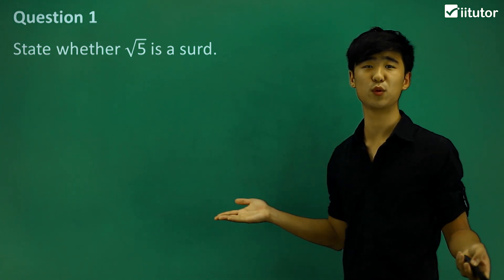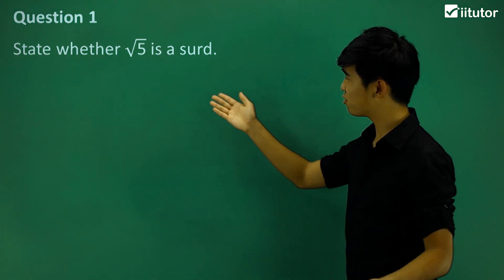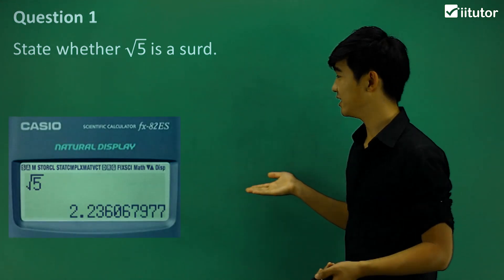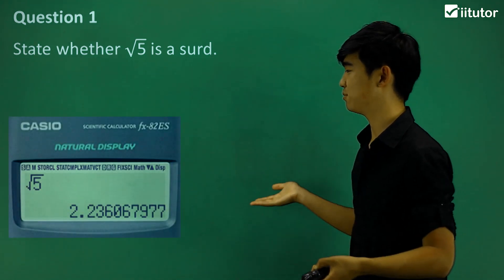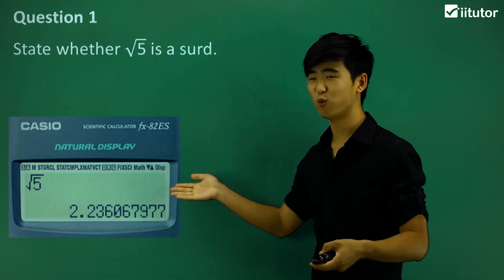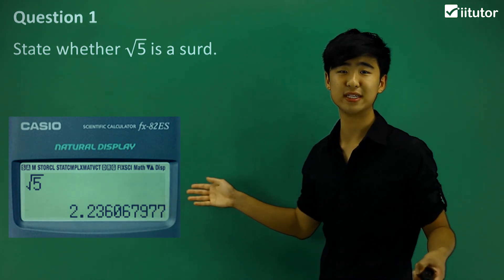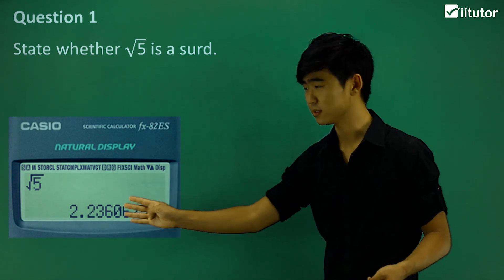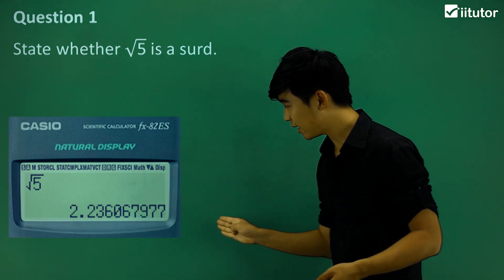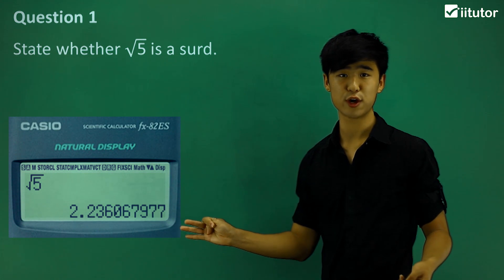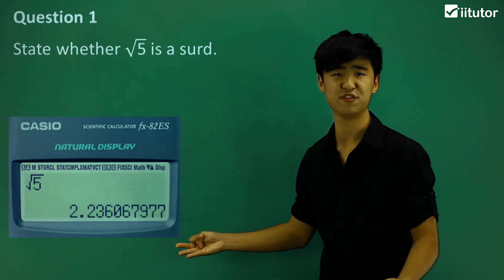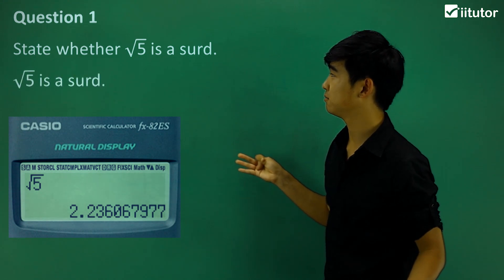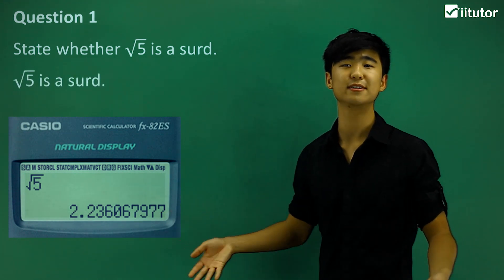Let's have a look at question one: state whether the square root of 5 is a third. The first thing we should do is put it into our calculator. We get 2.236 and so on. So it's endless, it's going on forever, and it's non-recurring, meaning it doesn't have a specific pattern. So this one does classify as a third. The square root of 5 is a third.